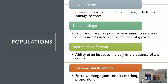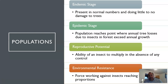In terms of insect populations, there are two big stages to think about. The endemic stage is when they're present in normal numbers and doing little to no damage to trees. The epidemic stage is when the population reaches a point where annual tree losses due to insects exceed annual growth in the forest — you're losing trees faster than the forest can regrow. The reproductive potential of an insect is defined as the ability to multiply in the absence of any control.